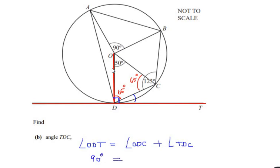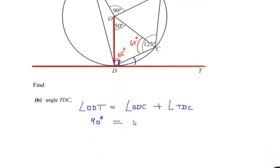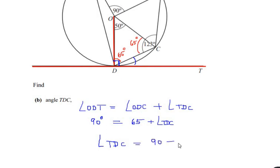Angle ODT equals 90 degrees, and angle ODC was found in part A as 65 degrees. So we get angle TDC as 90 degrees minus 65 degrees, which gives us an angle of 25 degrees.